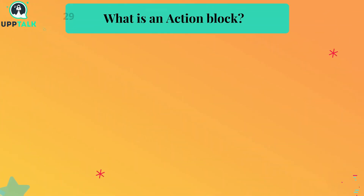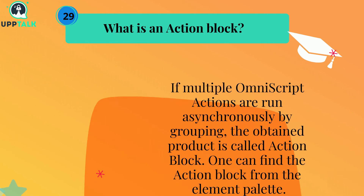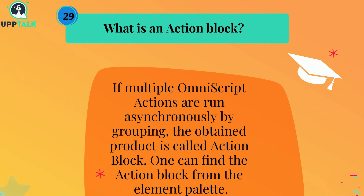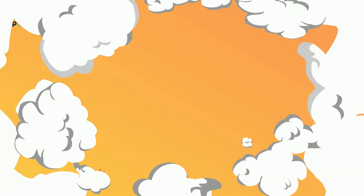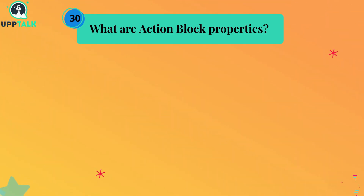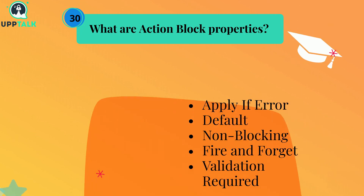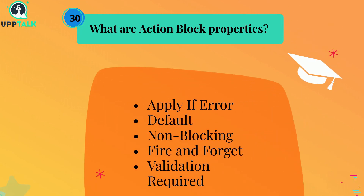What is an action block? If multiple OmniScript actions are run asynchronously by grouping, the obtained product is called an action block. One can find the action block from the element palette. What are action block properties? Apply if error, Default, None blocking, Fire and forget, Validation required.